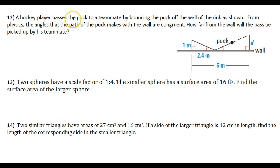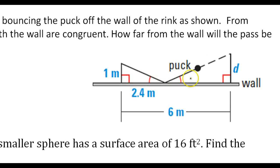A hockey player passes the puck to a teammate by bouncing the puck off the wall of the rink as shown. From physics, the angles that the path of the puck makes with the wall are congruent. How far from the wall will the path be picked up by his teammate? So we have similar triangles.